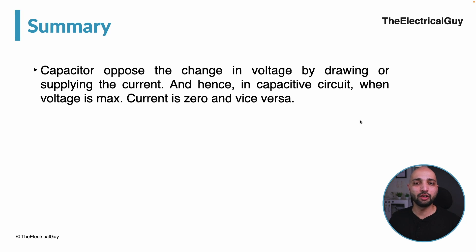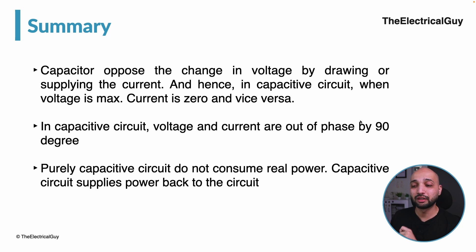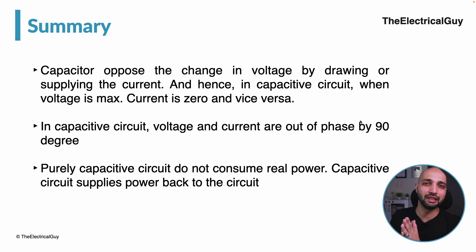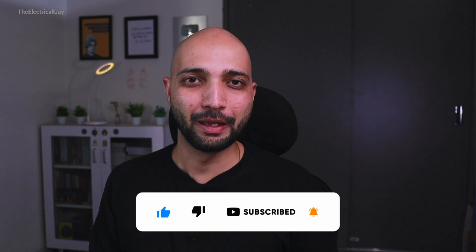To summarize: a capacitor opposes the change in voltage by drawing or supplying current, so when voltage is maximum current is zero and vice versa. Voltage and current are out of phase by 90° in a capacitive circuit. A purely capacitive circuit does not consume real power; it supplies reactive power back to the circuit — exactly opposite to an inductive circuit, which consumes reactive power. Thanks for watching, please like, share, and subscribe so you don't miss future videos.